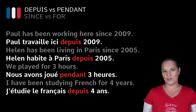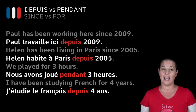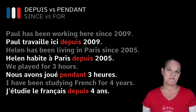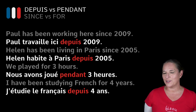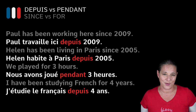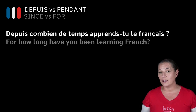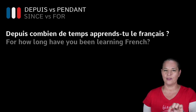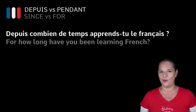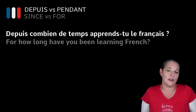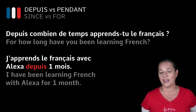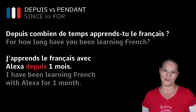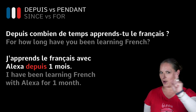What I would like you to do is have a look at these examples again and try to make your own sentence. Why don't you try to answer this question: 'Depuis combien de temps apprends-tu le français?' — 'For how long? How long have you been learning French?' You could answer: 'J'apprends le français avec Alexa depuis un mois' — 'I have been learning French with Alexa for one month.'